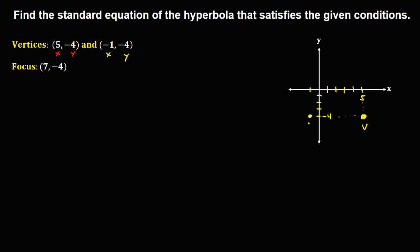From the given focus, x is positive 7 and y. So we count to positive 7, and this is now the coordinate of the focus.